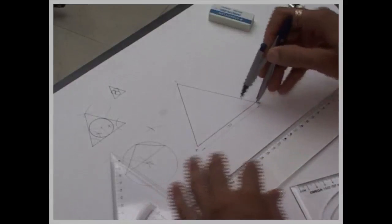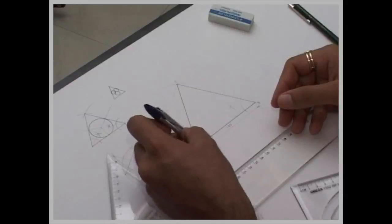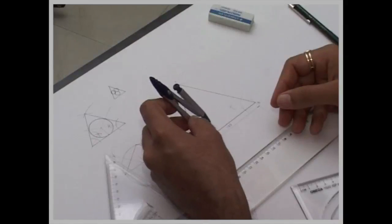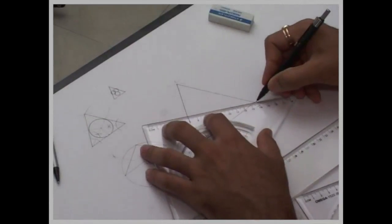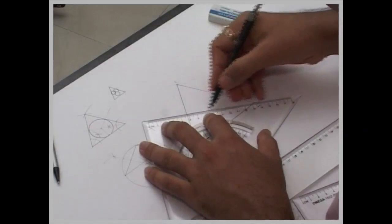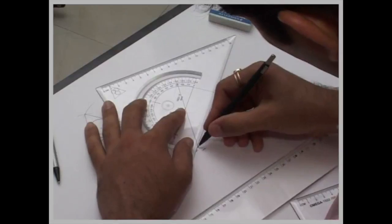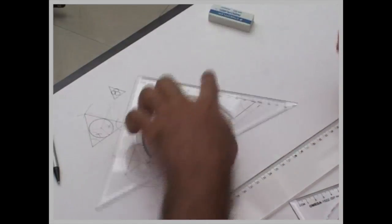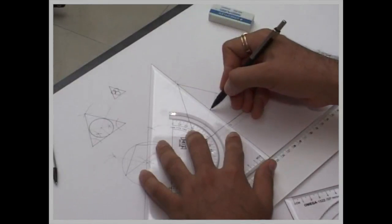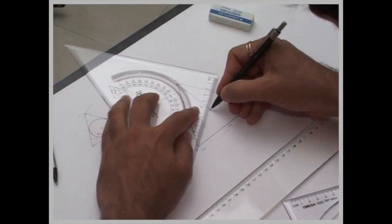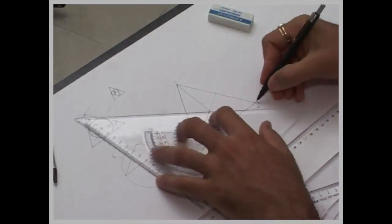First, we will bisect angle B and angle A. Draw line from C also. So, if you observe this, what we are doing, we are dividing triangle into three equal parts.